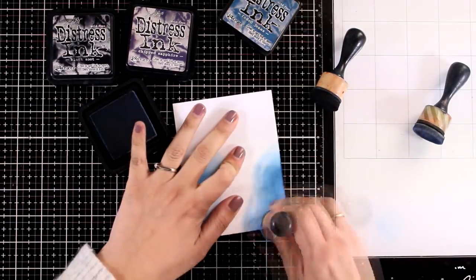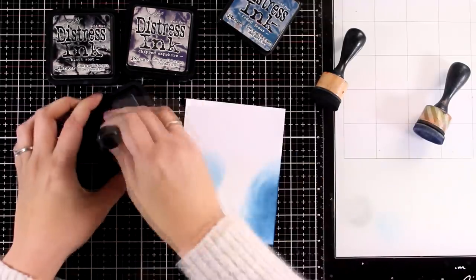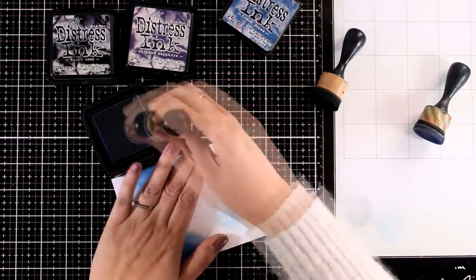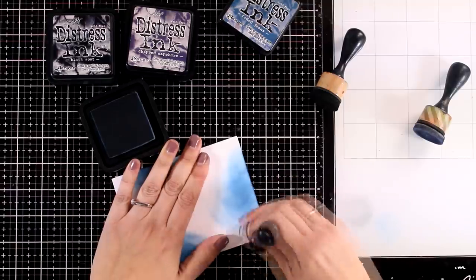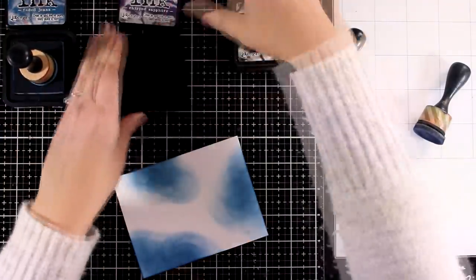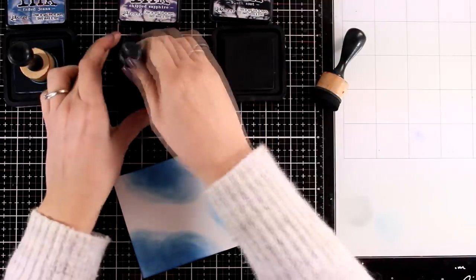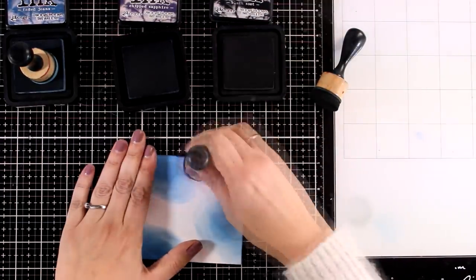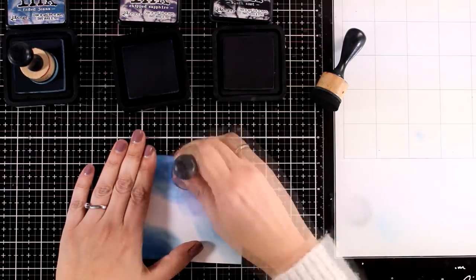By the way, I'm working on Neenah solar white cardstock which is very smooth and this is really important for blending distress inks. If you want you can create something similar by using your oxides, however it's going to look paler since oxides do have that chalky finish.